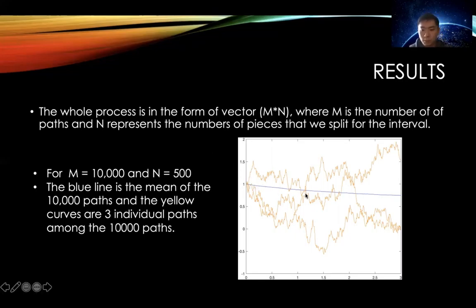You can see the blue line here is the mean of the 10,000 paths. It looks like a straight line, but it has a little bit decreasing trend. And the three yellow curves are three individual paths among all the 10,000 paths.